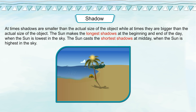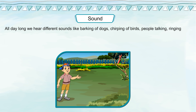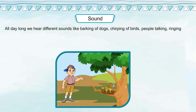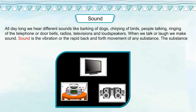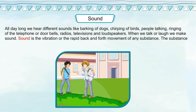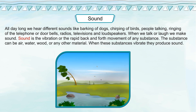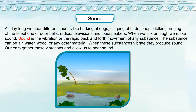Sound — all day long, we hear different sounds like barking of dogs, chirping of birds, people talking, ringing of telephone or doorbells, radios, televisions and loudspeakers. When we talk or laugh, we make sound. Sound is the vibration or the rapid back and forth movement of any substance. The substance can be air, water, wood or any other material. When these substances vibrate, they produce sound. Our ears gather these vibrations and allow us to hear sound.